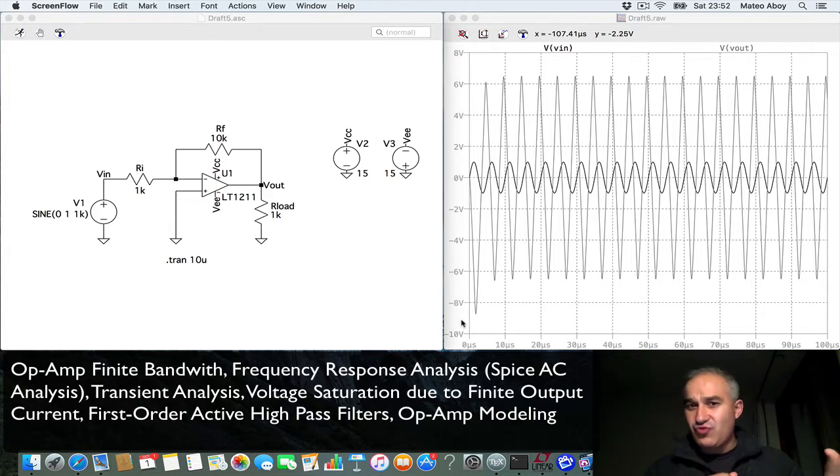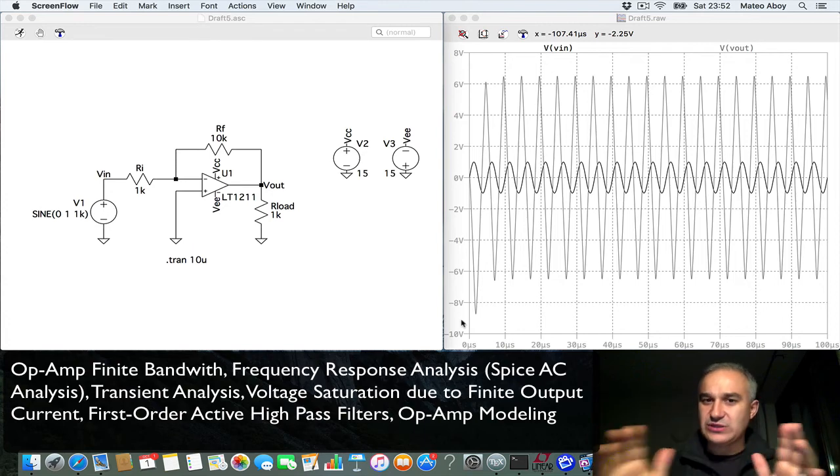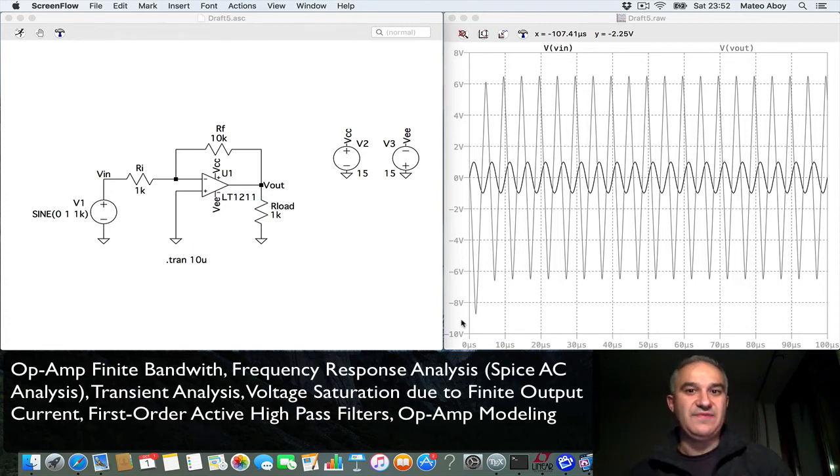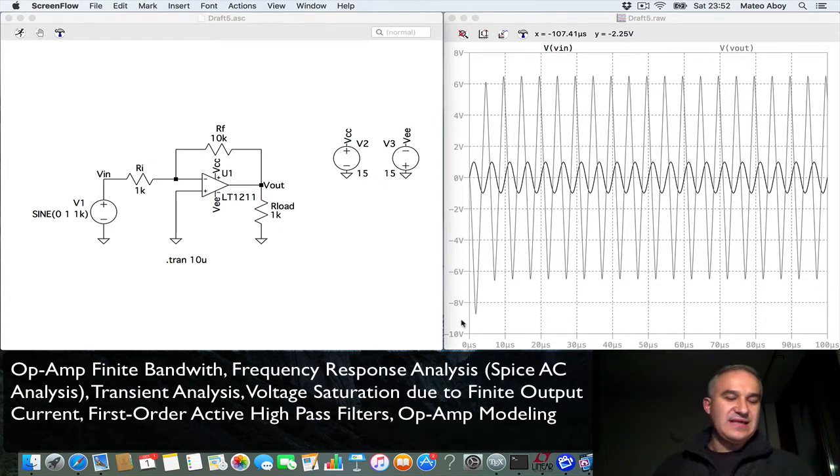before we already did a transient analysis, I want to do an AC analysis meaning the frequency response of this amplifier. You may say hey, but this is an amplifier that only has a resistor in the feedback and a resistor in the input, it is an inverting amplifier, it is supposed to be independent of frequency.